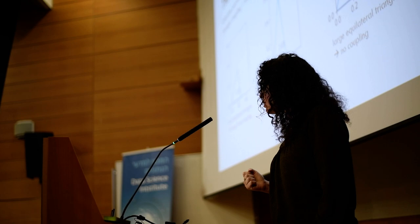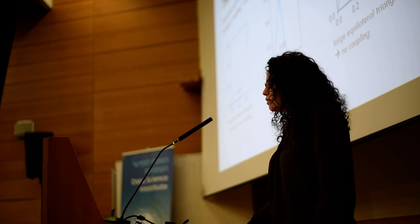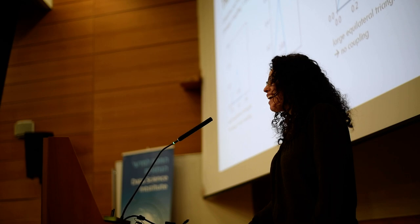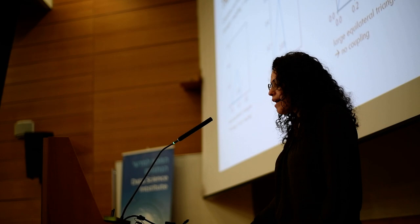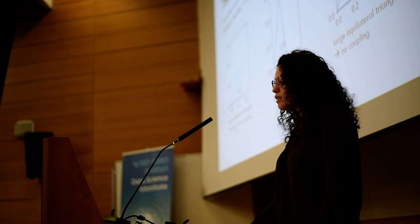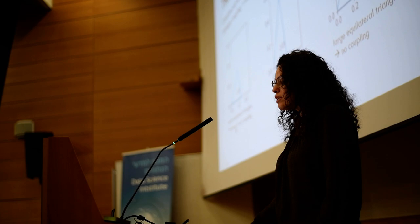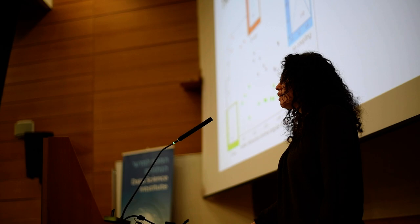Shorter length means stronger coupling. There's another dimension — another parameter — which is how equilateral the triangles are. This captures whether all dyads in the trio are similar in their coupling strength, or whether one dyad is very highly coupled and two are less so, or all three are less coupled. This is an example of a triangle with strong three-way coupling, this is an example of two-way coupling, and this is an example of no heart rate coupling.